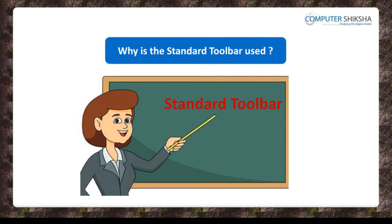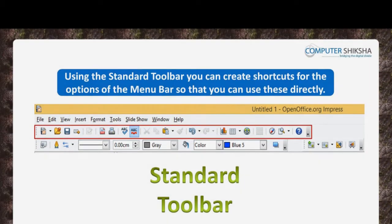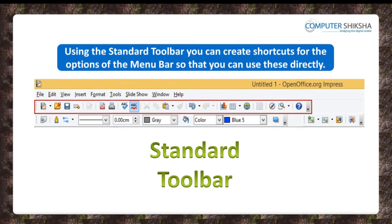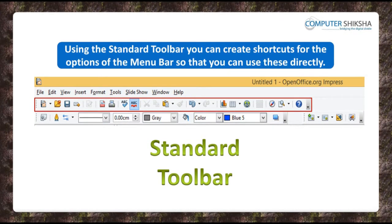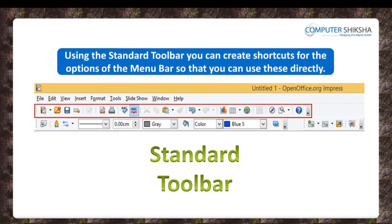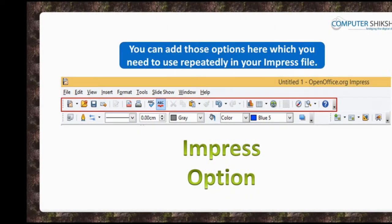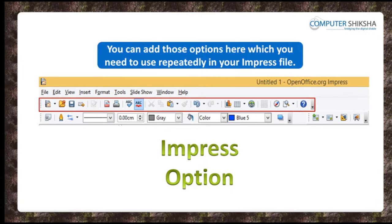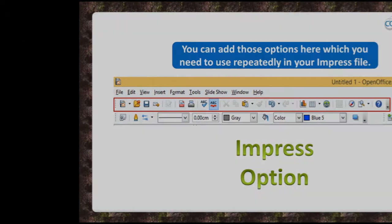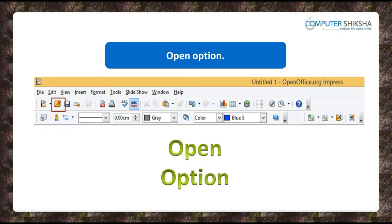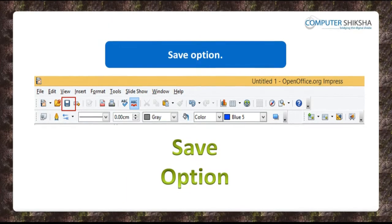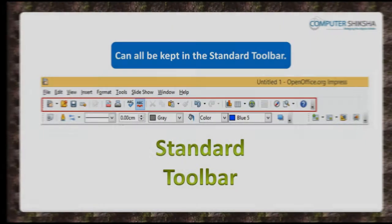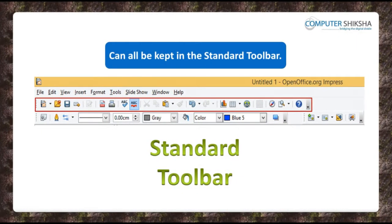Why is the standard toolbar used? Using the standard toolbar, you can create shortcuts for the options of the menu bar so that you can use these directly. You can add those options here which you need to use repeatedly in your Impress file — for instance, New, Open, Save, Hyperlink, etc. can all be kept in the standard toolbar.